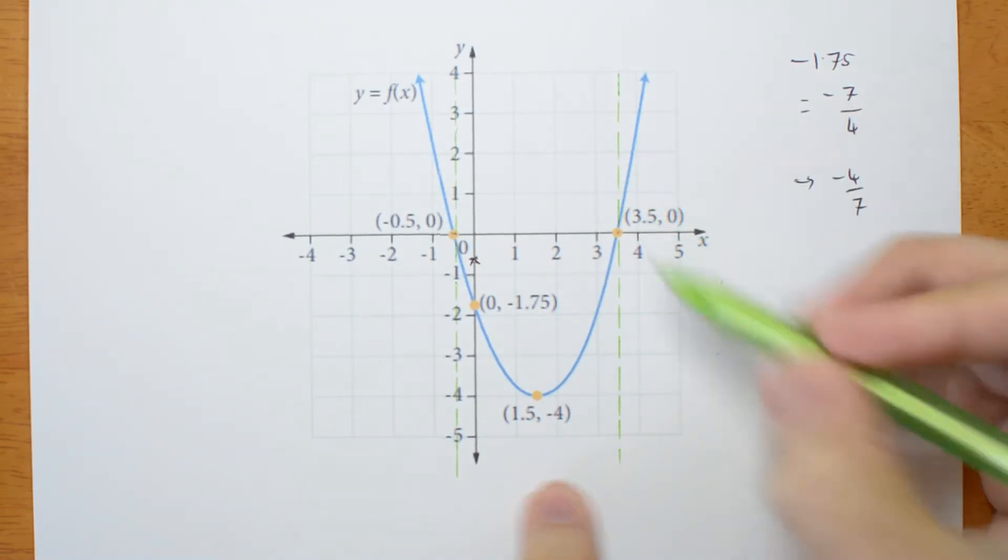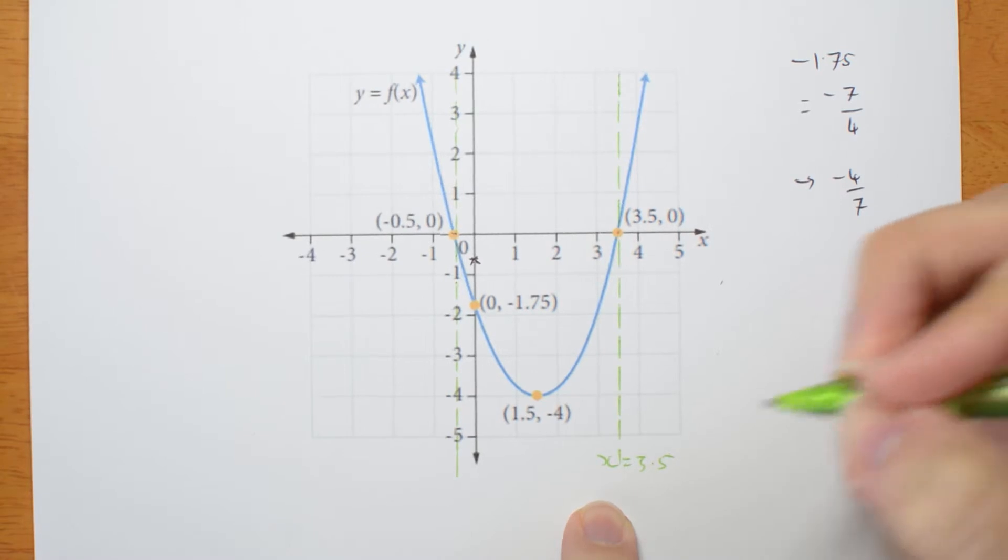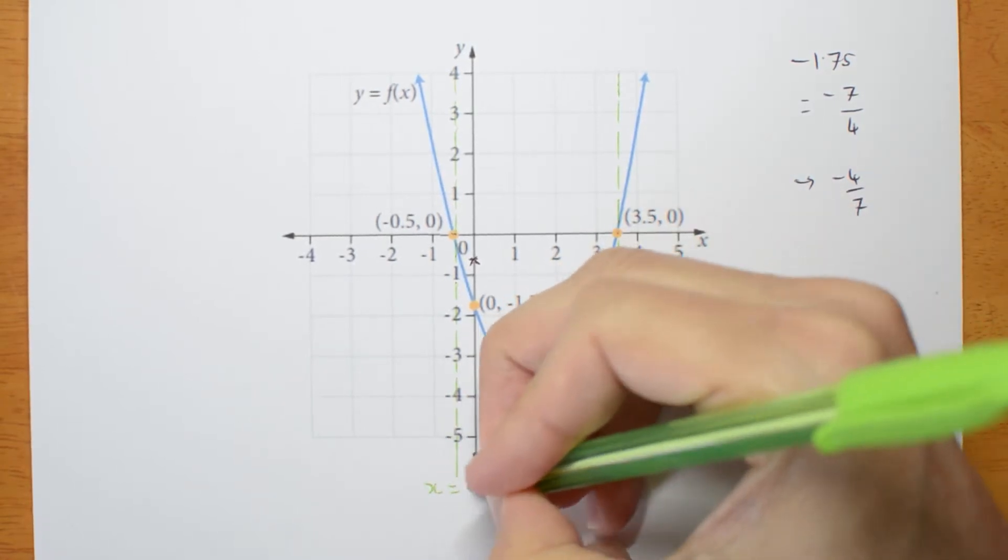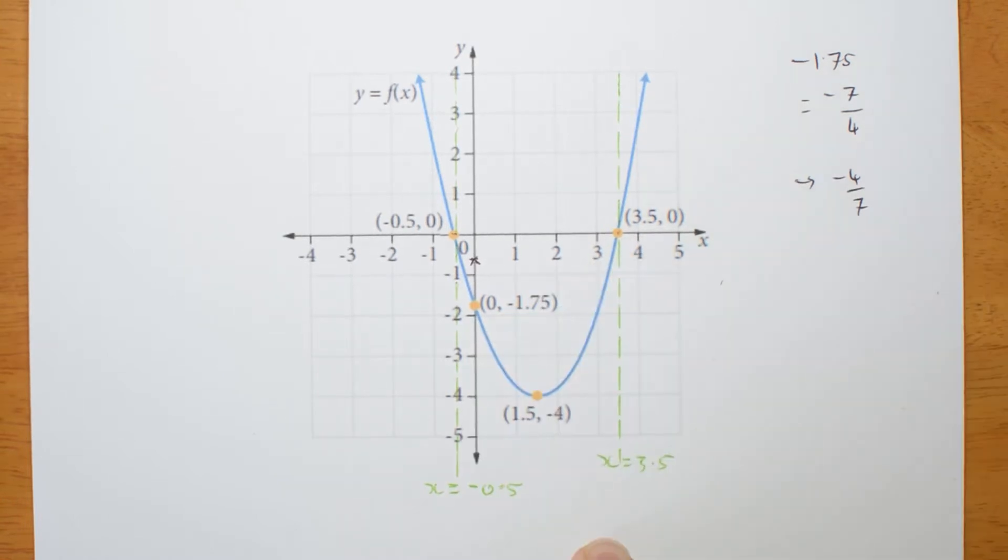It does tell me the coordinates. So I can say x equals 3.5 is an asymptote. And x equals negative 0.5 is an asymptote. What else do I know?